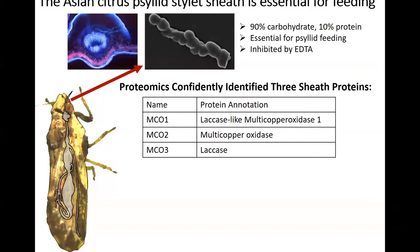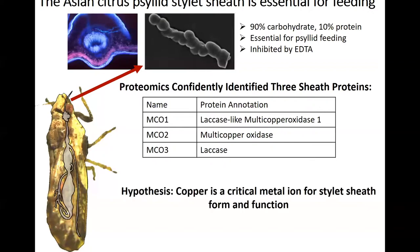Strikingly, I only found three proteins abundant in this structure: a laccase-like multi-copper oxidase, a multi-copper oxidase, and a laccase with a predicted copper binding moiety. So this led me to develop the hypothesis that copper might be a critical metal ion for the form and function of the stylet sheath.